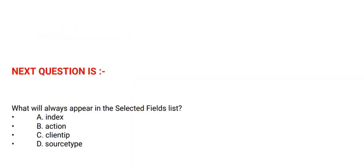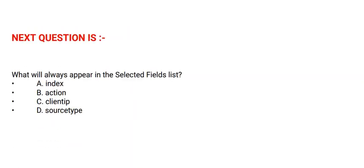Next question: what will always appear in the selected fields list? Option A: Index. Option B: Action. Option C: Client Tip. Option D: Source Type. The correct option is option D.